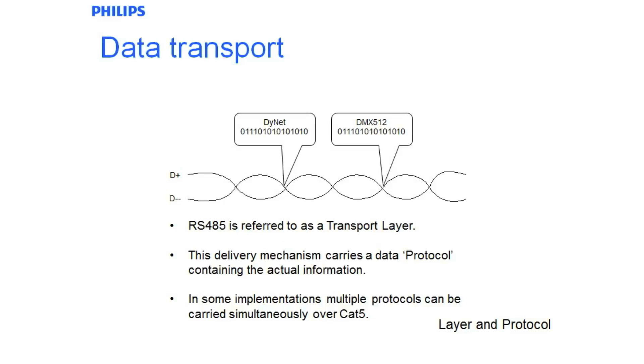In some implementations, multiple protocols can be simultaneously used over CAT5. In some instances, you can utilize DMX and Dynet on the same conductor pairs, while you could have a device that, once it starts receiving your DMX-512, it will obey it, but the rest of the time it is in Dynet mode. That is often done in performing arts centers.